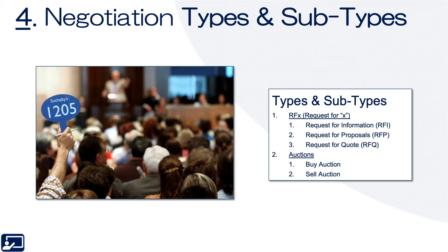Fourth topic: types and subtypes. Negotiations are largely categorized into two different types. First, RFX — where the X is a wildcard for request for information, request for proposal, request for quote — meaning RFI, RFP, RFQ — or auctions.